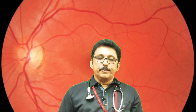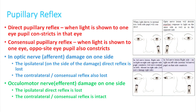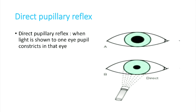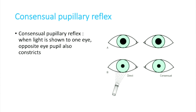For pupillary reflex examination, when you put light on one eye, the pupil constricts on that side — this is the direct pupillary reflex. The consensual, or indirect, pupillary reflex is when the opposite eye also constricts when light is shown to one eye.